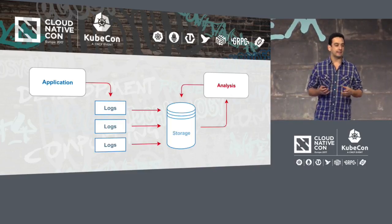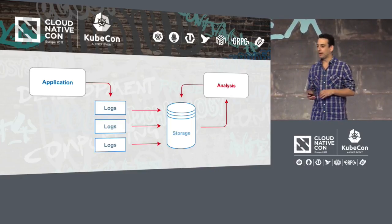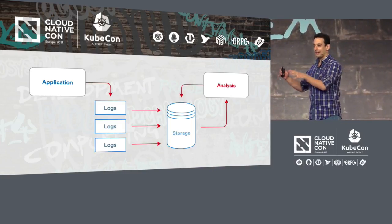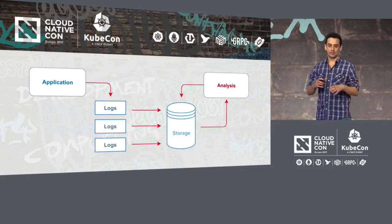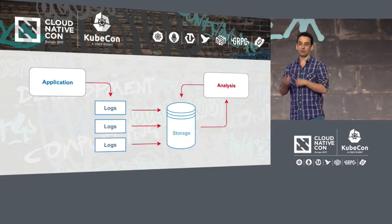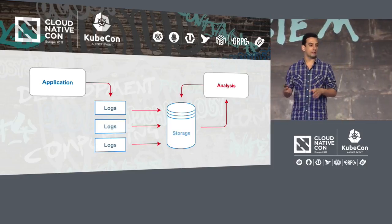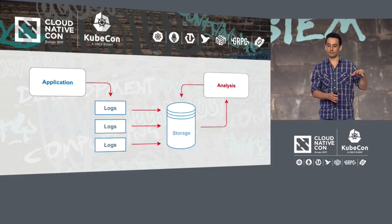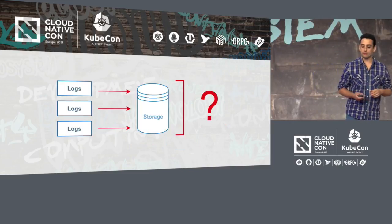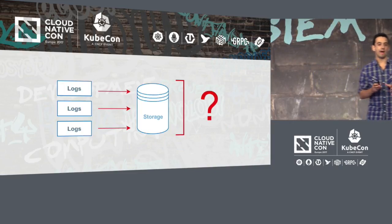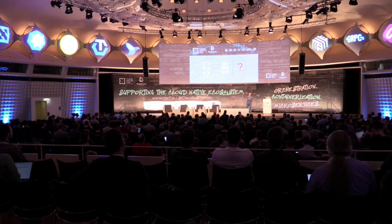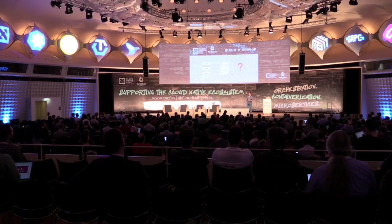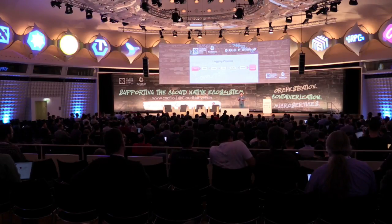A log can also be sent over the network. The logging mechanisms that exist nowadays are many. But if we want to make some analysis over those logs, there's a full process we need to go through, because we want to take these logs and insert them into a centralised storage — and that is not so simple. So how do we take different logs from different applications, from different nodes, and centralise them to perform our own analysis?